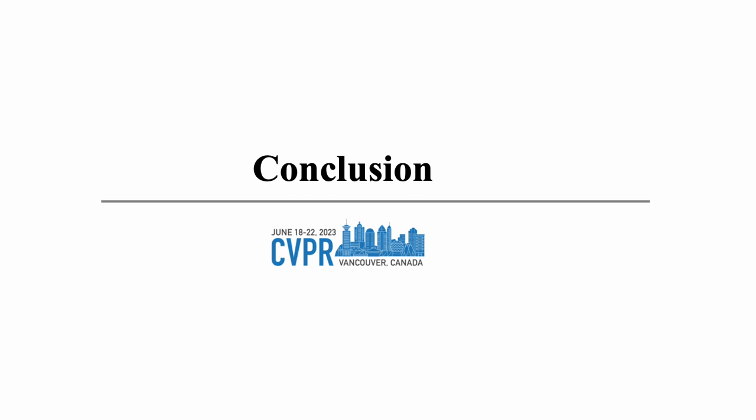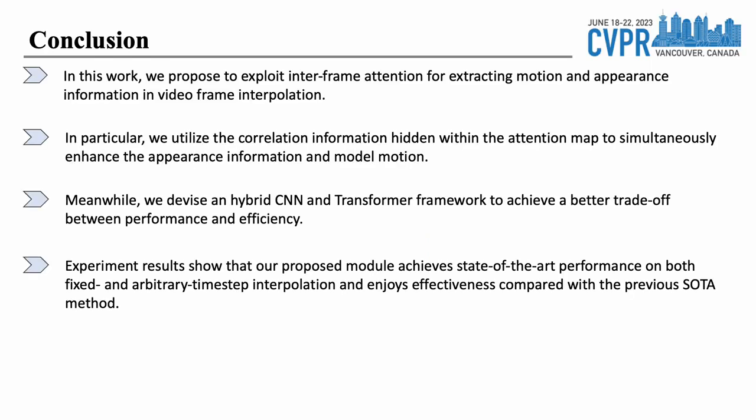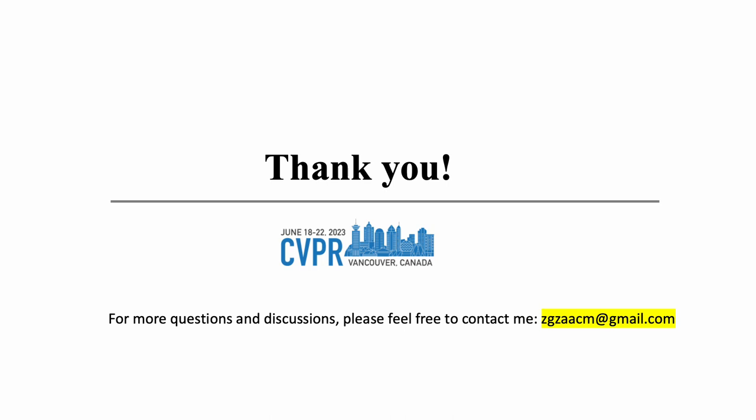In conclusion, we propose to exploit interframe attention for extracting motion and appearance information in video frame interpolation. We utilize the correlation information hidden within the attention map to simultaneously enhance appearance information and model motion. We devise a hybrid CNN and transformer framework to achieve a better trade-off between performance and efficiency. Experimental results show that our proposed module achieves state-of-the-art performance on both fixed and arbitrary time-step interpolation with greater efficiency compared to previous SOTA methods. Thank you all for tuning in. If you have any questions, please feel free to reach out to me at any time.